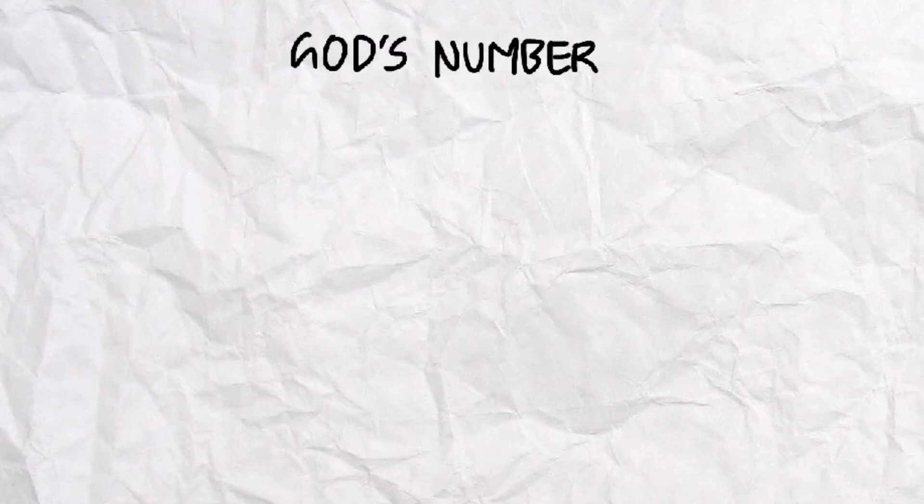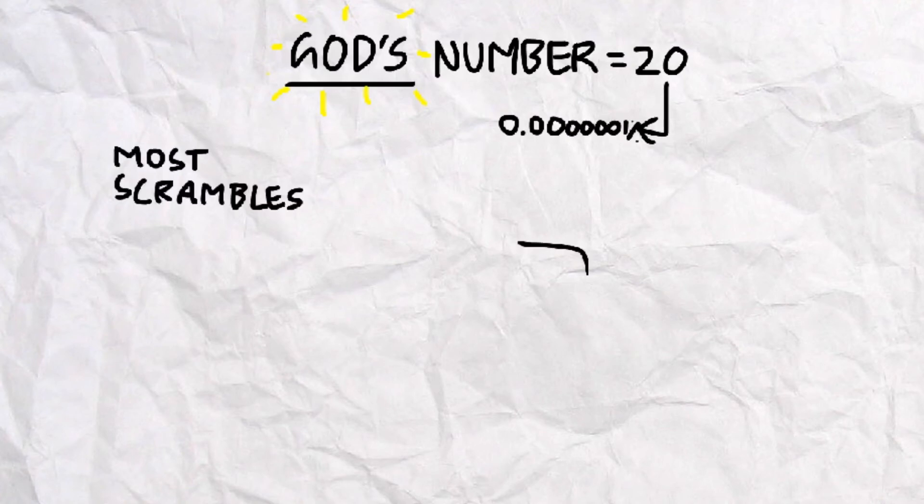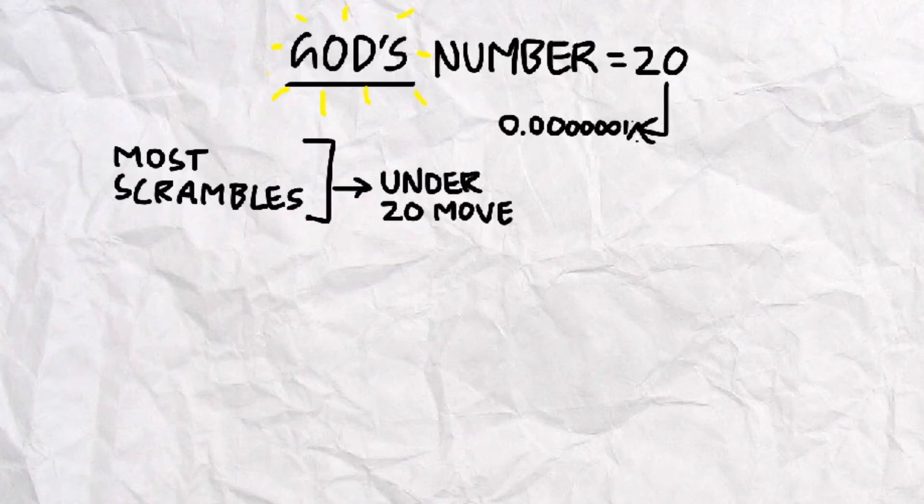So, mathematical proving done. On to some real talk. God's number is the minimum number of rotations to complete any given scramble of a Rubik's Cube, any of those 43 quintillion scrambles we just proved. But there is a reason why it is labeled God's Number, as it would require God-like analysis and algorithms to perform. The number 20 also only covers 0.000001% of scrambles, which means that most can be performed under 20 moves.